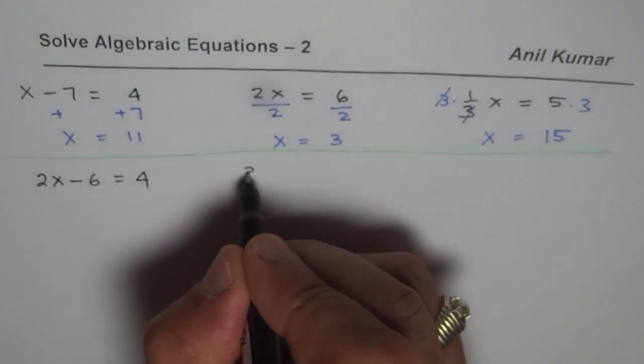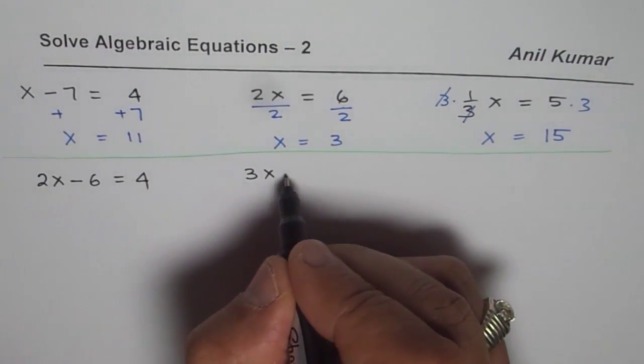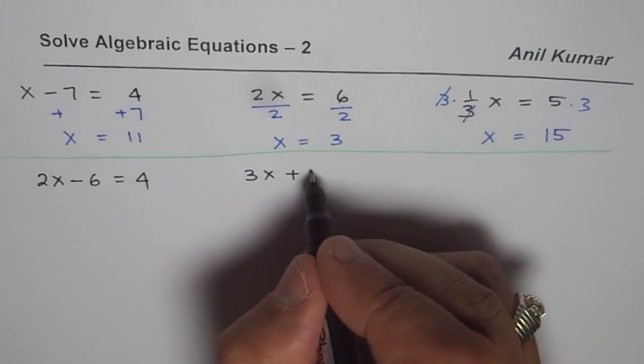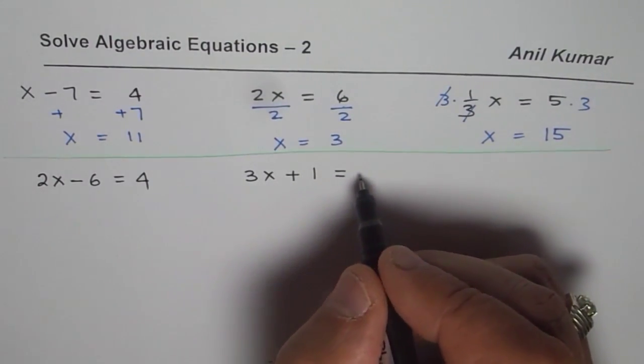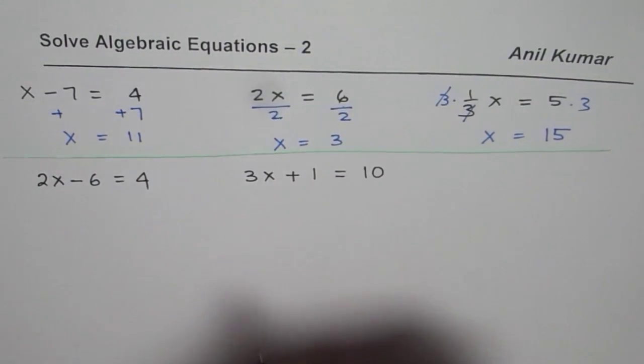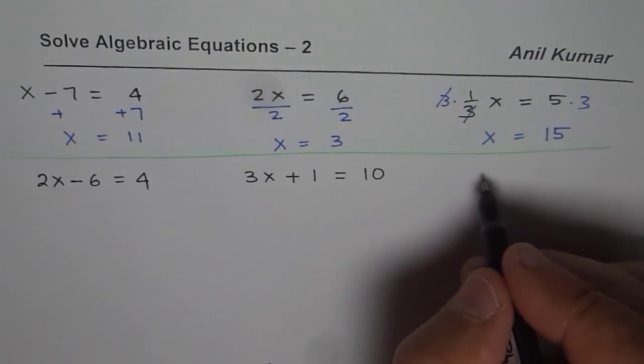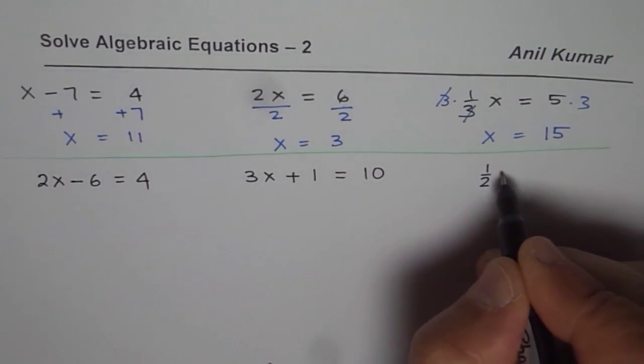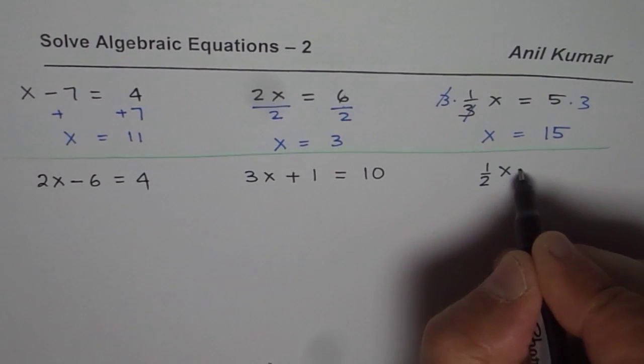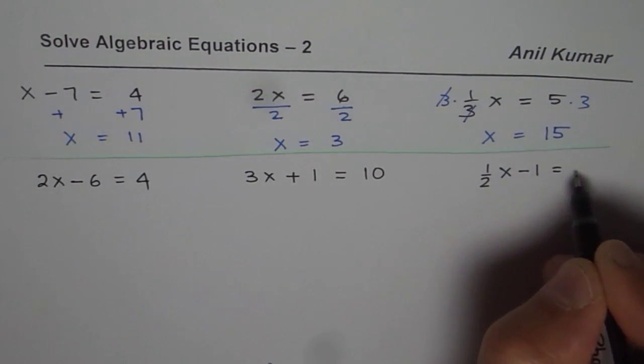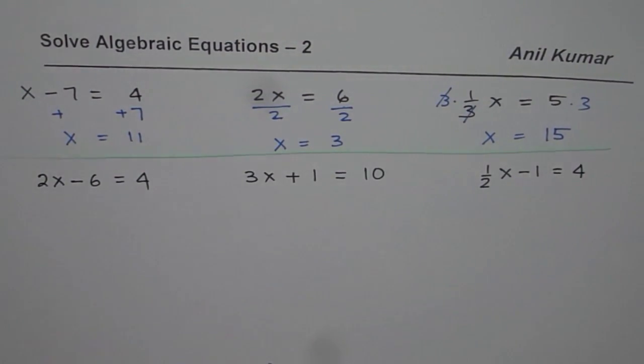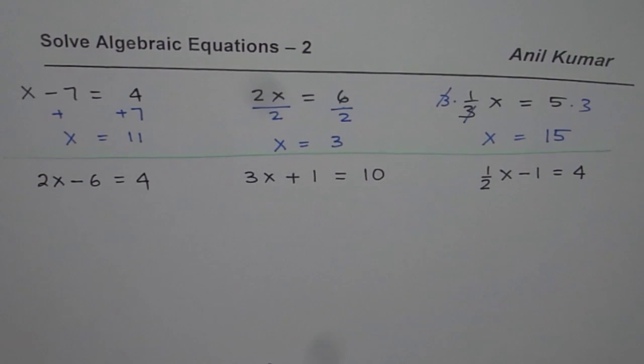So instead of 2x I could have 3x also. 3x plus let's say 1 equals, let's say, 10. Then what is going to be the solution? And it could be even half, so it could be half of x minus 1 equals 4. How to solve such equations now?